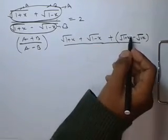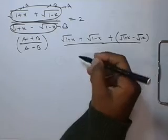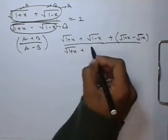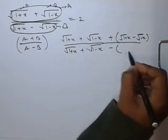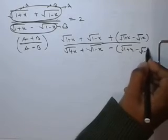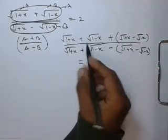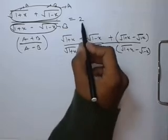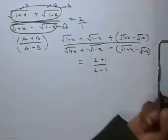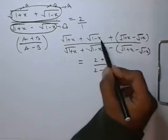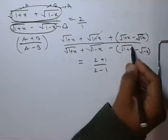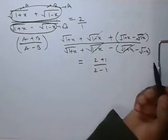We take √(1+x) as 'a' and √(1-x) as 'b', so the numerator is a + b and the denominator is a - b. Expanding: (√(1+x)·√(1+x) - √(1+x)·√(1-x)) / (√(1+x) - √(1-x)). On the other side, 2 can be written as 2/1. We can cancel √(1-x) from one side and √(1+x) from the other side.